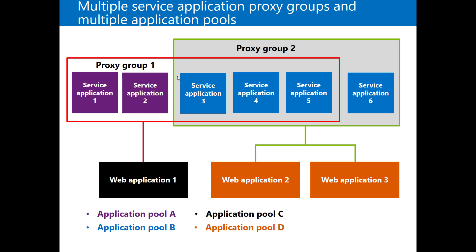In another architecture, you may have a business scenario requiring two proxy groups. One proxy group contains some service applications shared with two web applications. Additionally, you may have another proxy group that contains unique service applications only for itself, while also sharing some — but not all — service applications. This is a complex architecture that requires documentation to maintain.